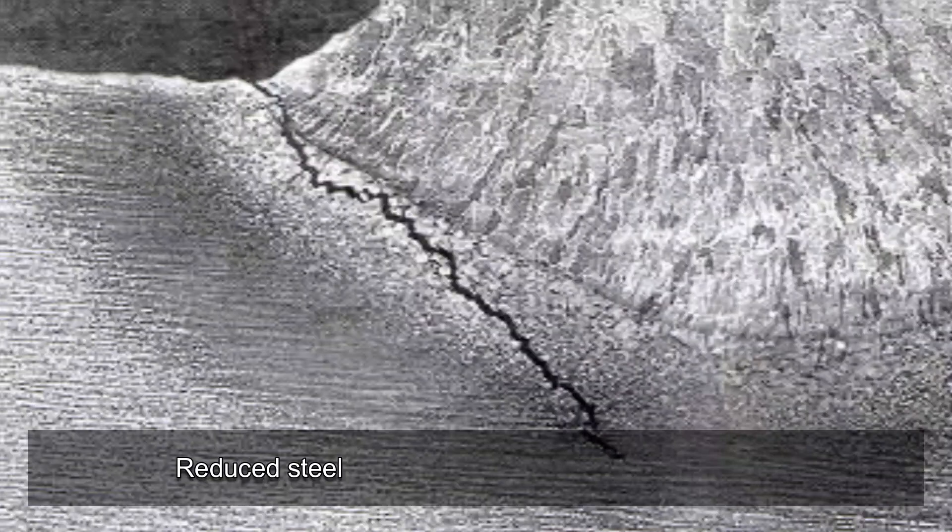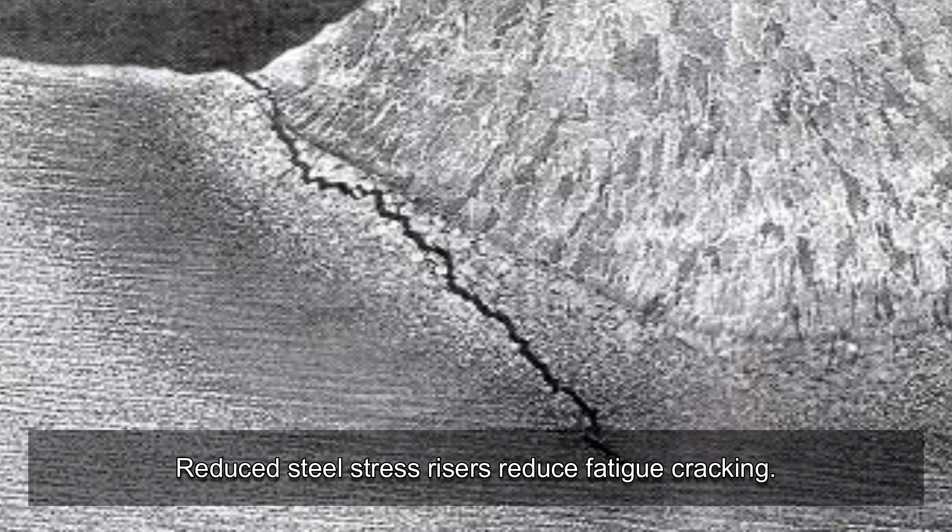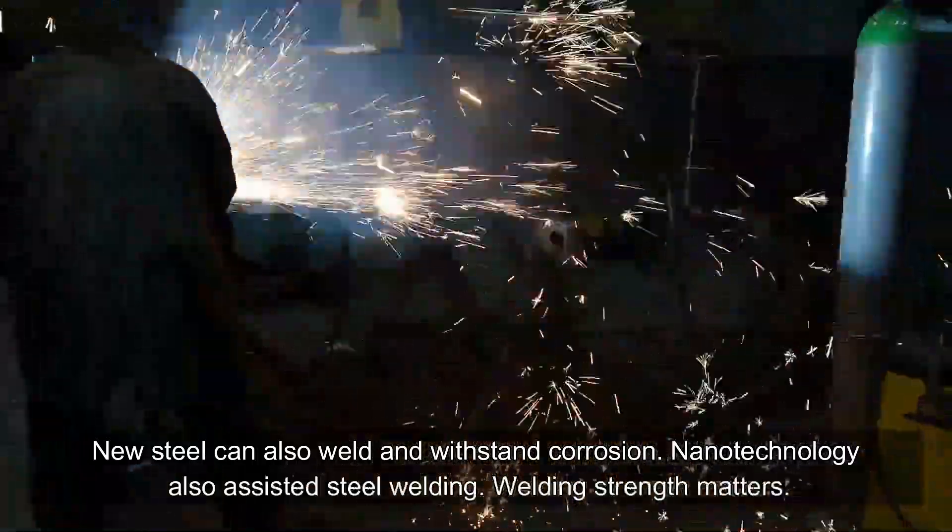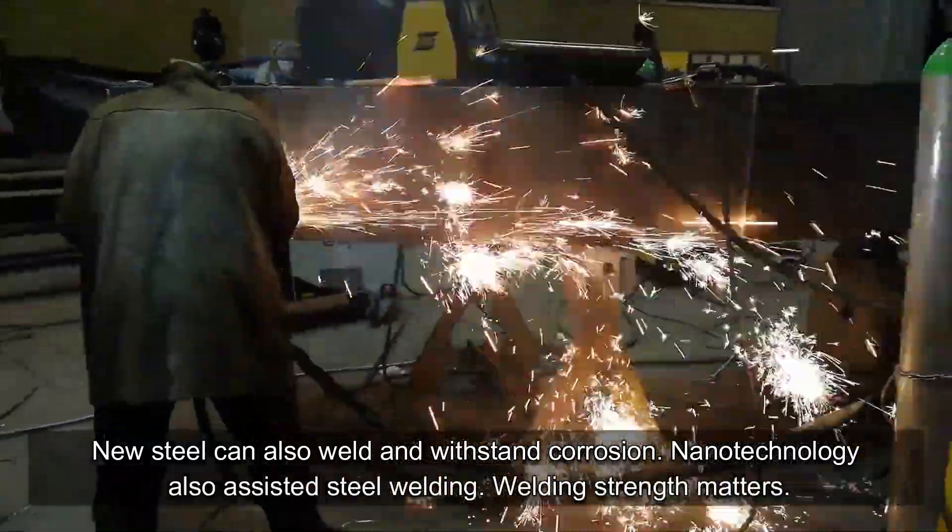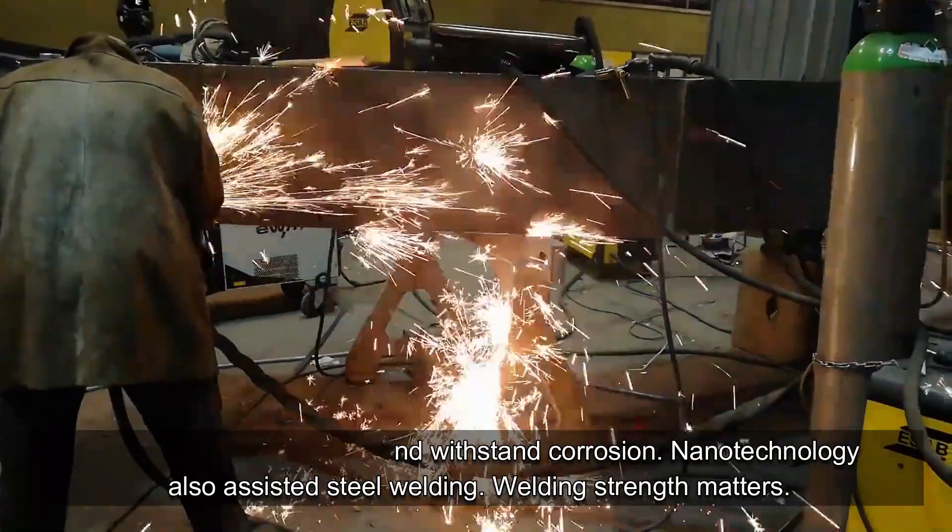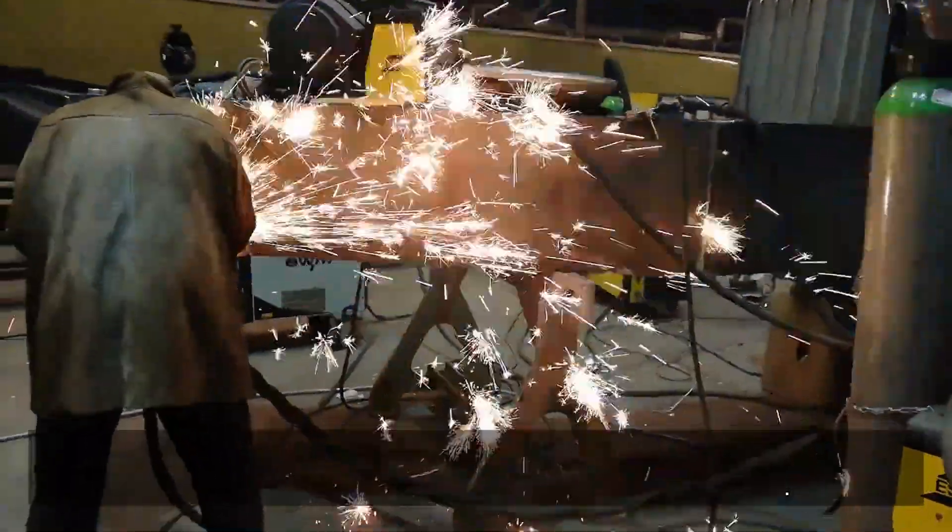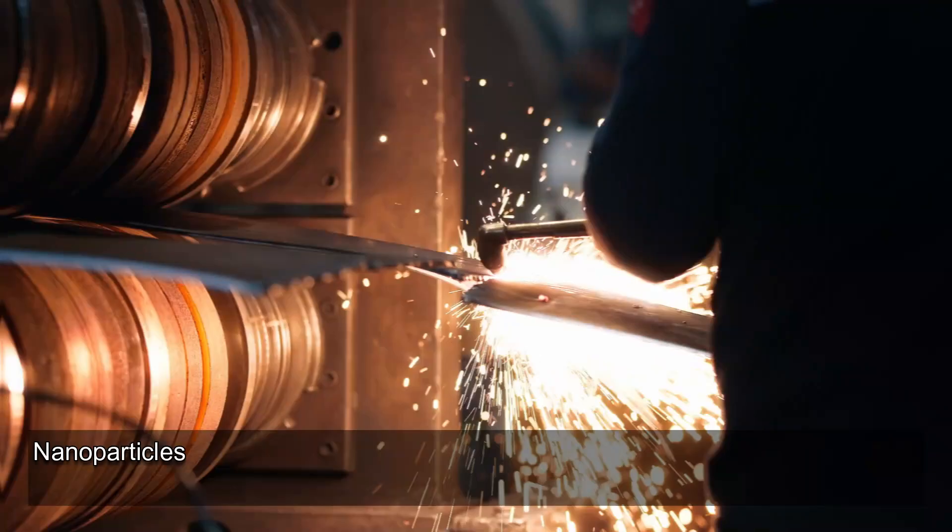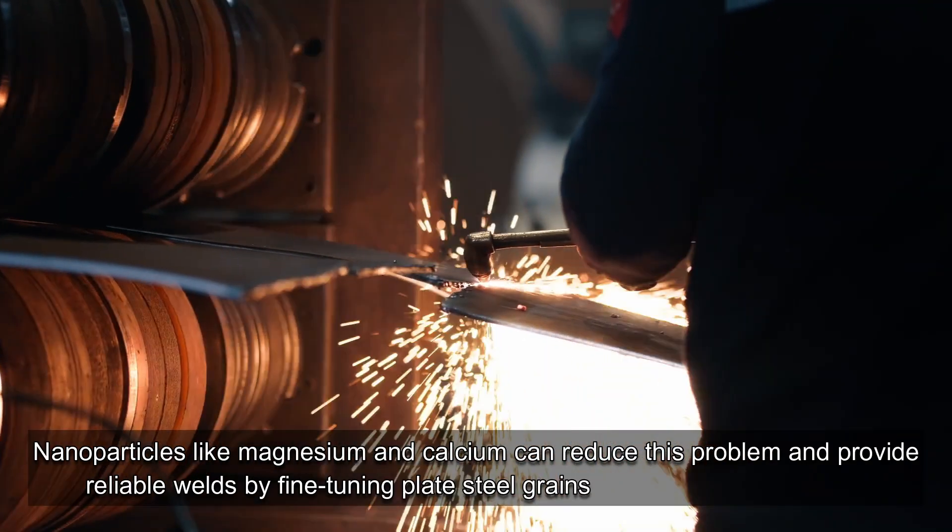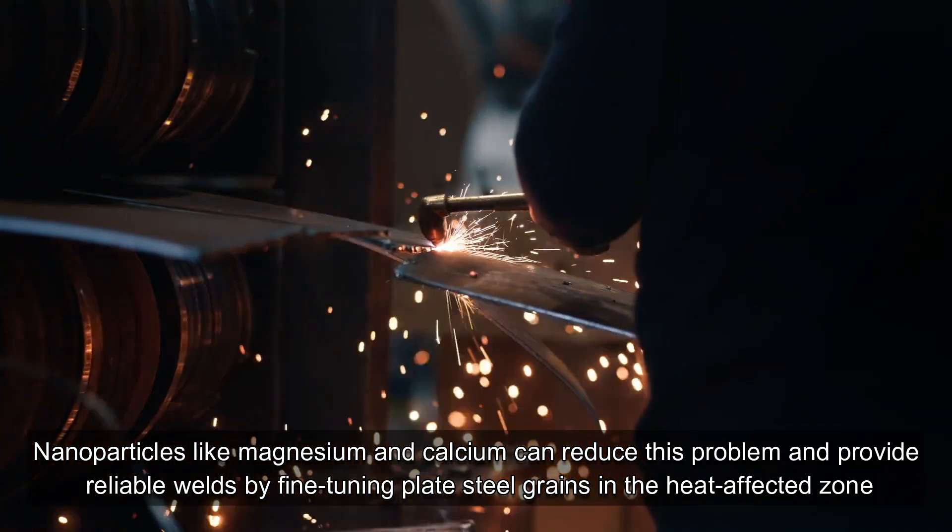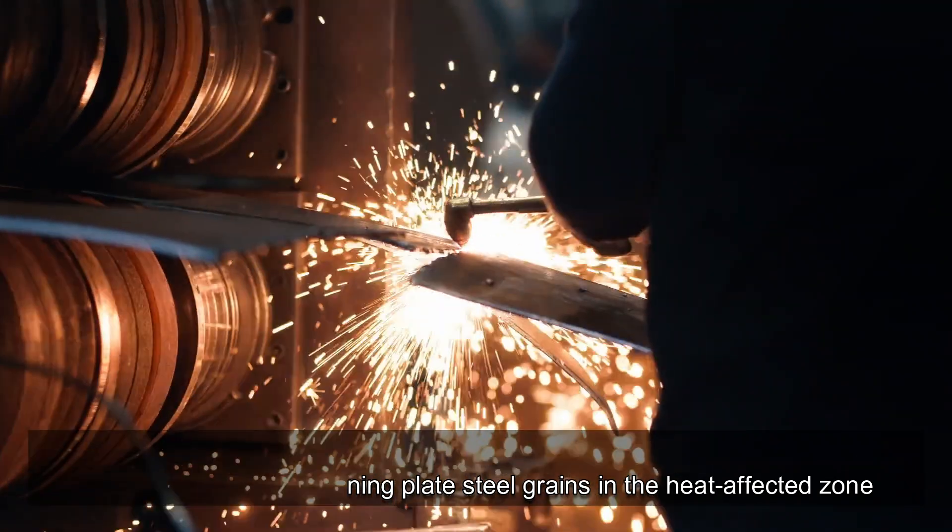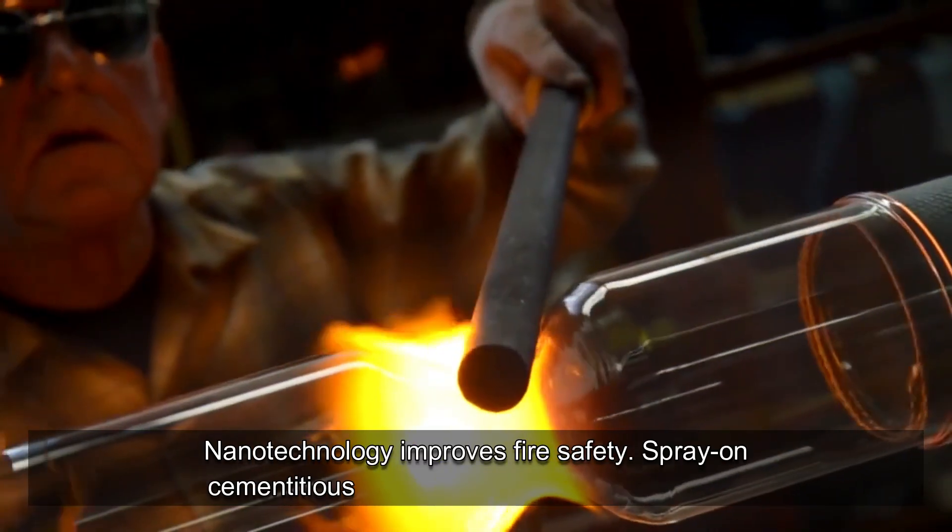Nanotechnology also assisted steel welding. Welding strength matters. A weld's heat-affected zone can come apart without warning. Nanoparticles like magnesium and calcium can reduce this problem and provide reliable welds by fine-tuning plate steel grains in the heat-affected zone. Nanotechnology improves fire safety.